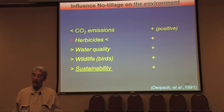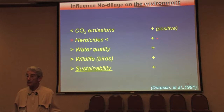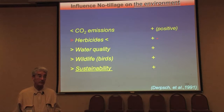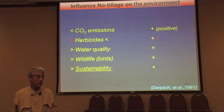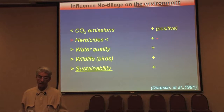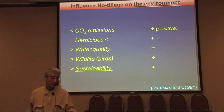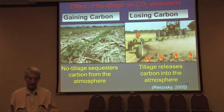Influence of no-tillage on the environment: CO2 emissions are reduced with no-tillage — that's positive. Herbicide use may increase or decrease depending on management, but experienced no-tillers in Brazil, Argentina, and the United States have reduced herbicide use by about 20% when using permanent no-tillage with good crop rotation. Water quality is increased. Wildlife, especially birds, are increased. And of course the main benefit is that sustainability is finally achieved — or, as was said earlier, we are getting closer to sustainability using this system.